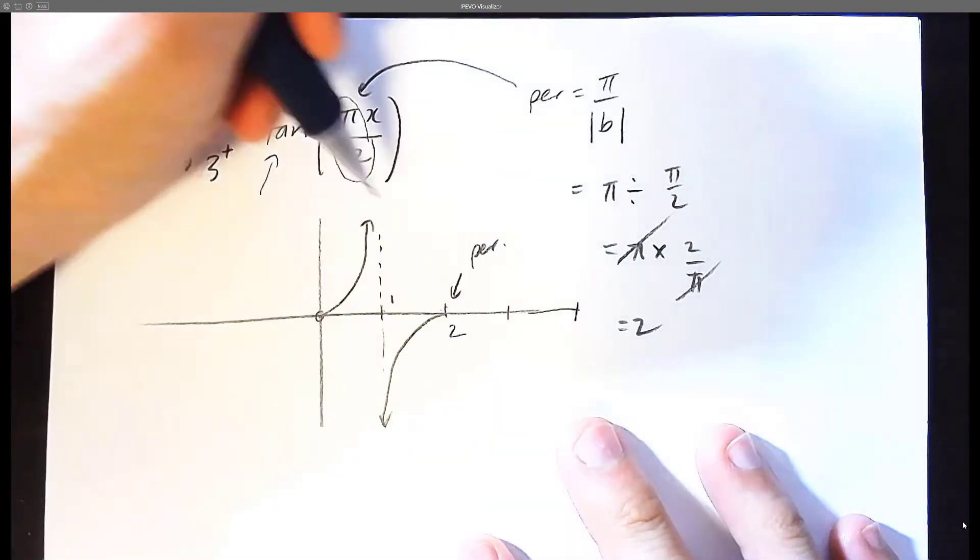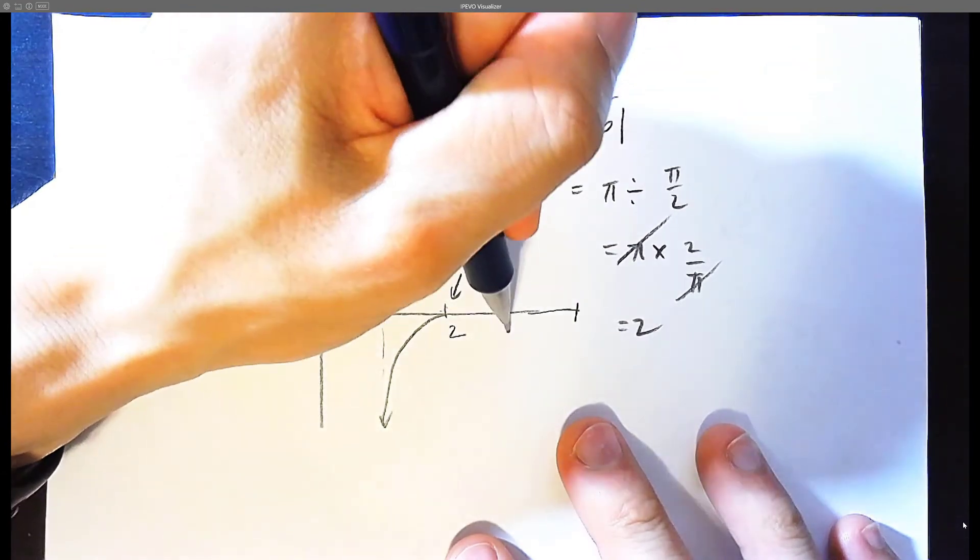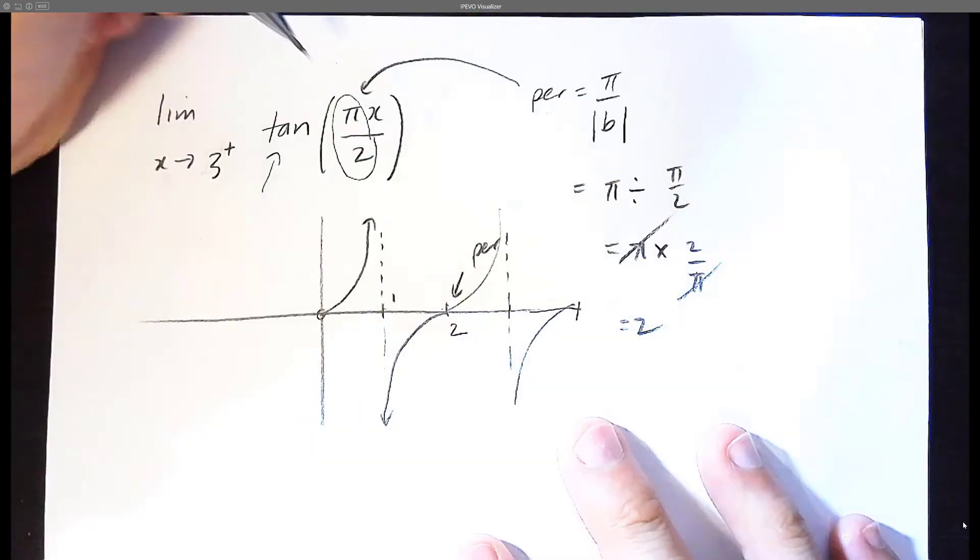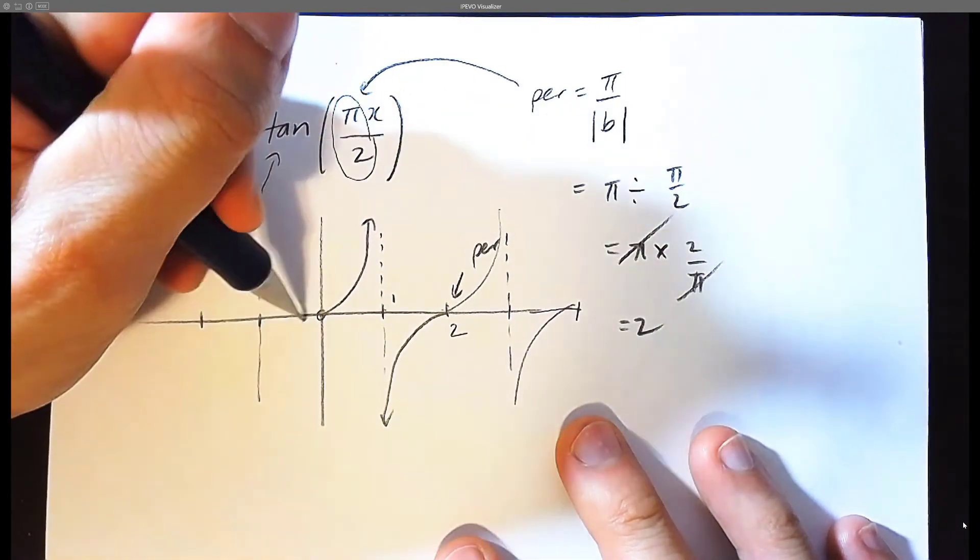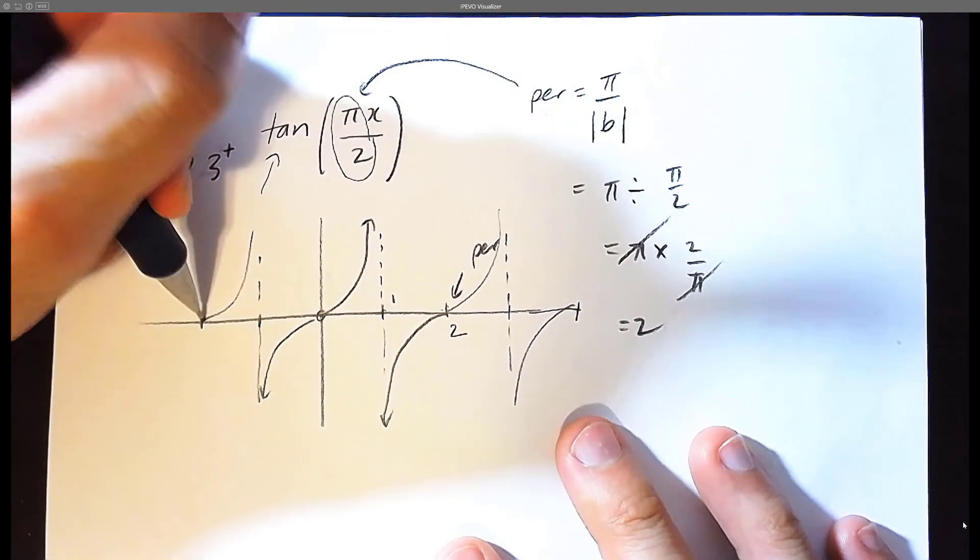And if you really want, you can continue the pattern here. The pattern here is every two ticks you have a vertical asymptote, and you curve it this way. And you can even go to negative land here. Every two ticks you have a vertical asymptote, it curves this way, and it comes down this way.